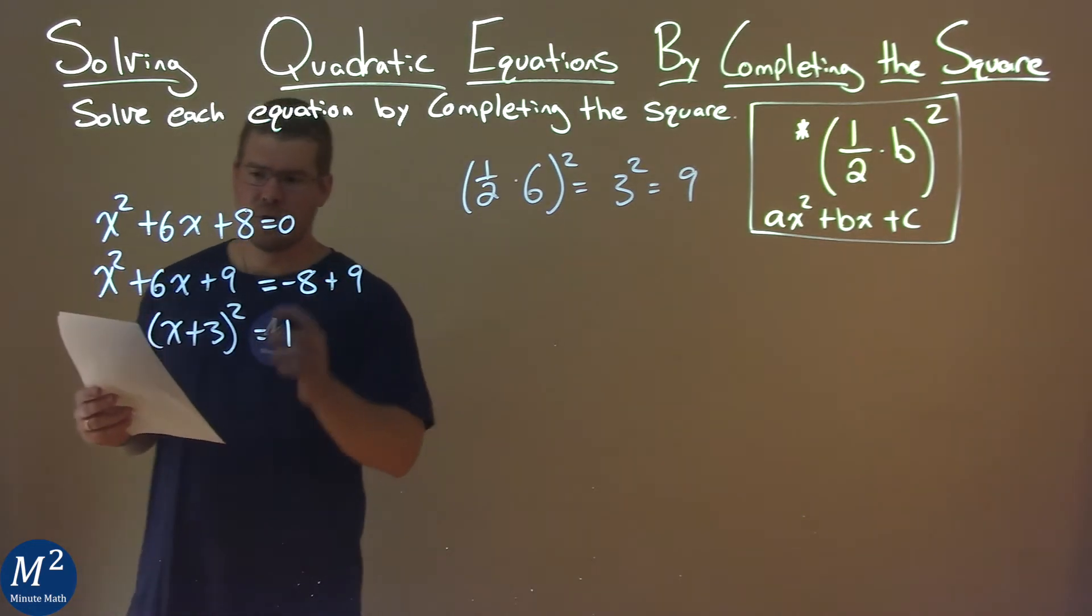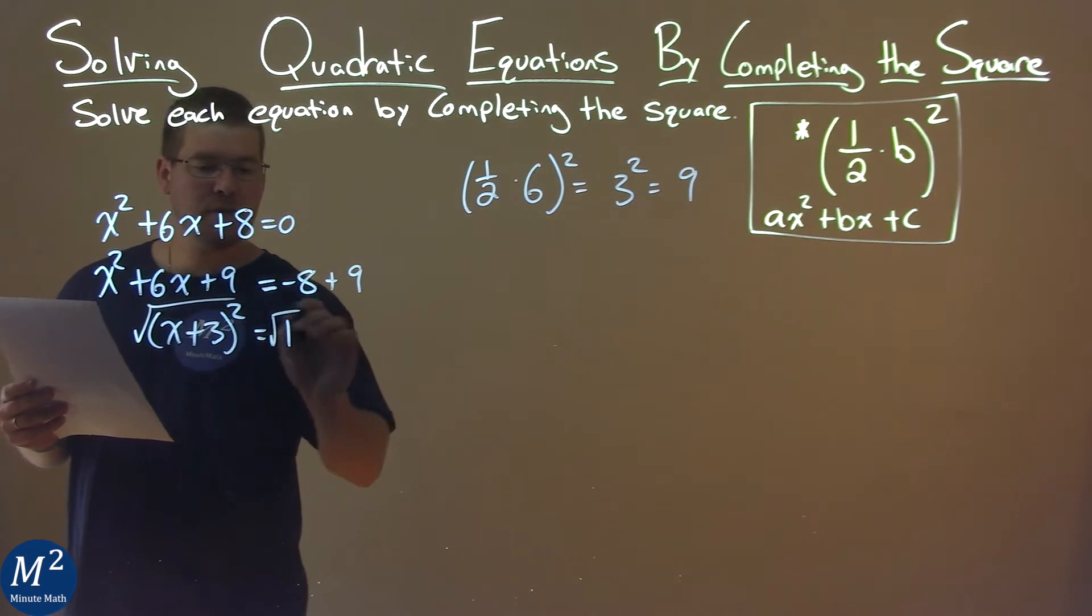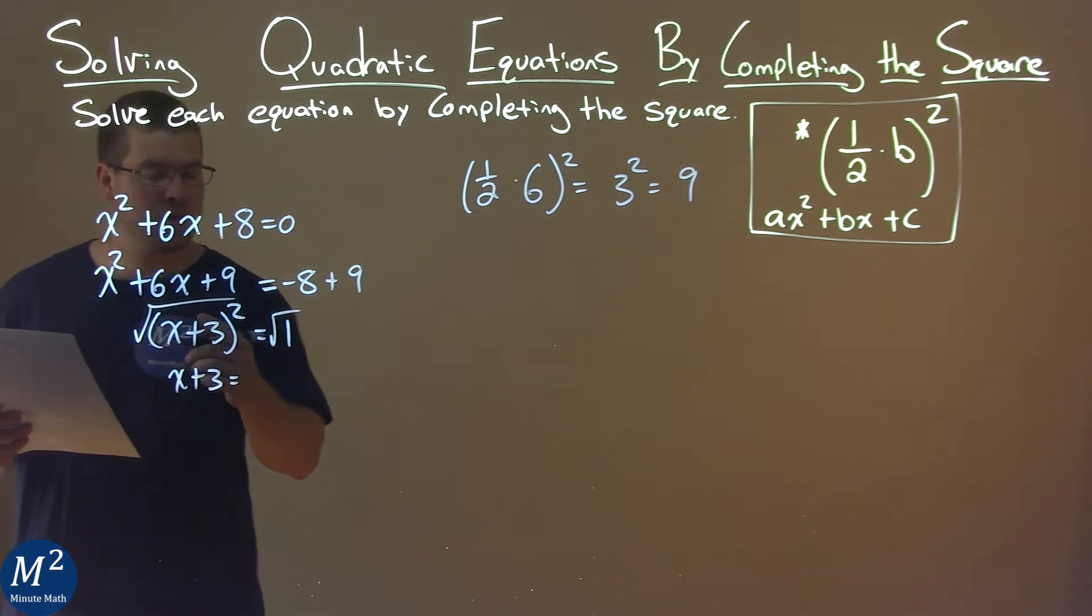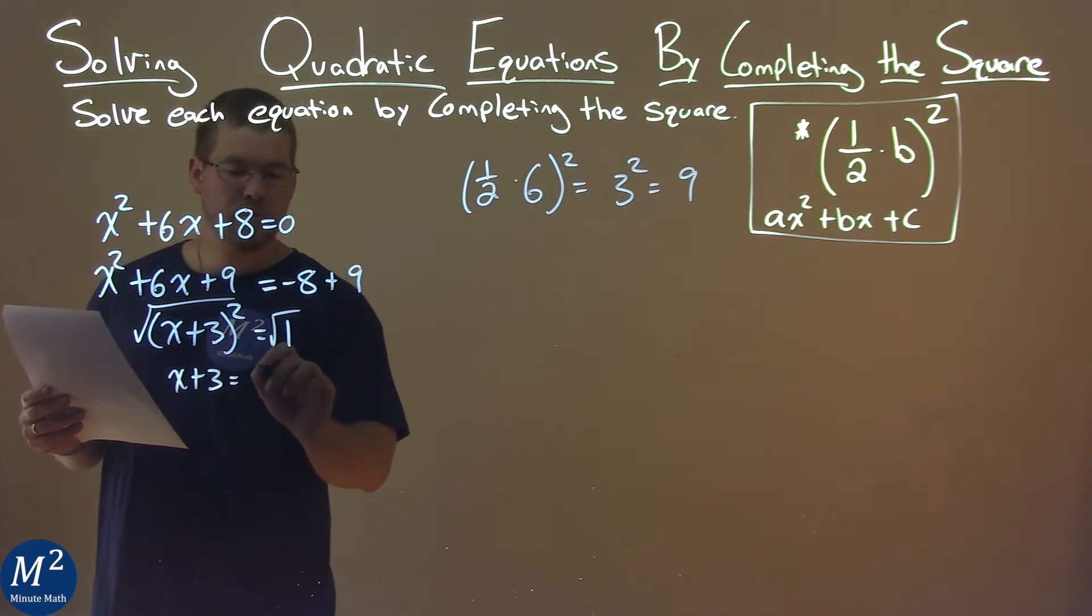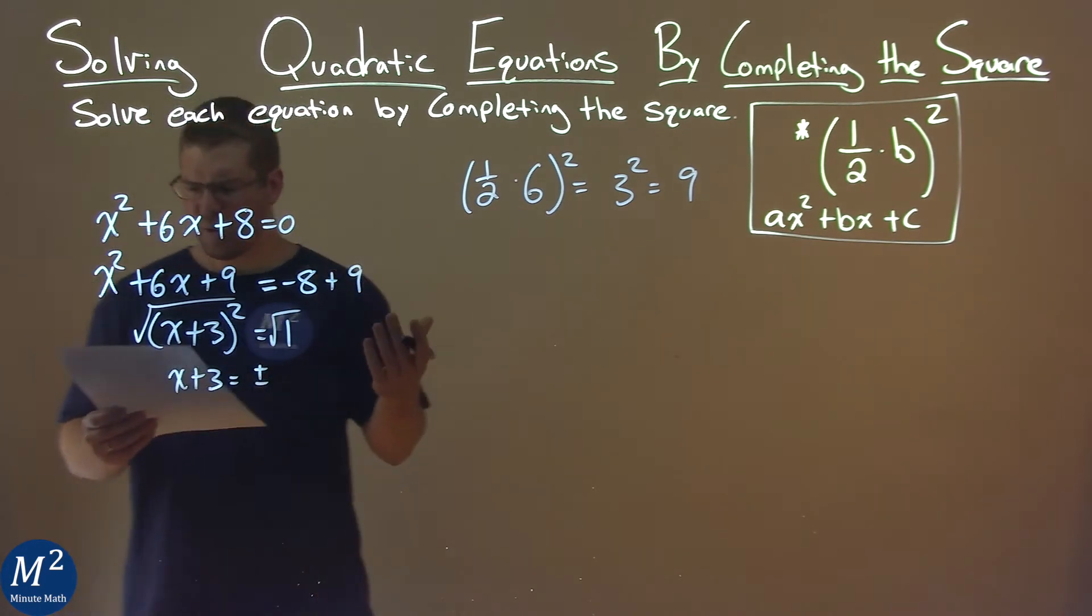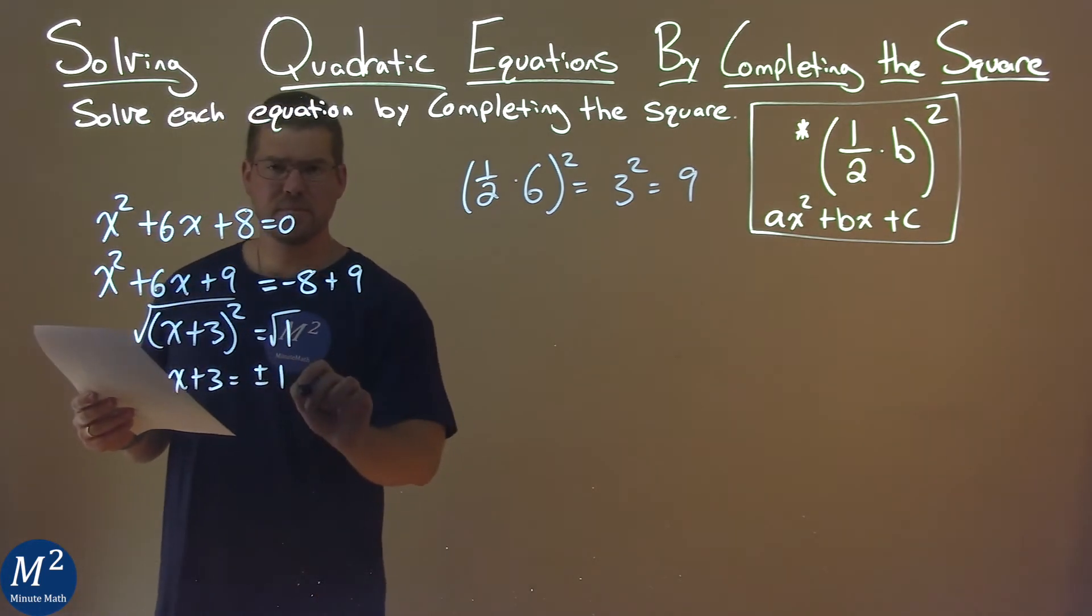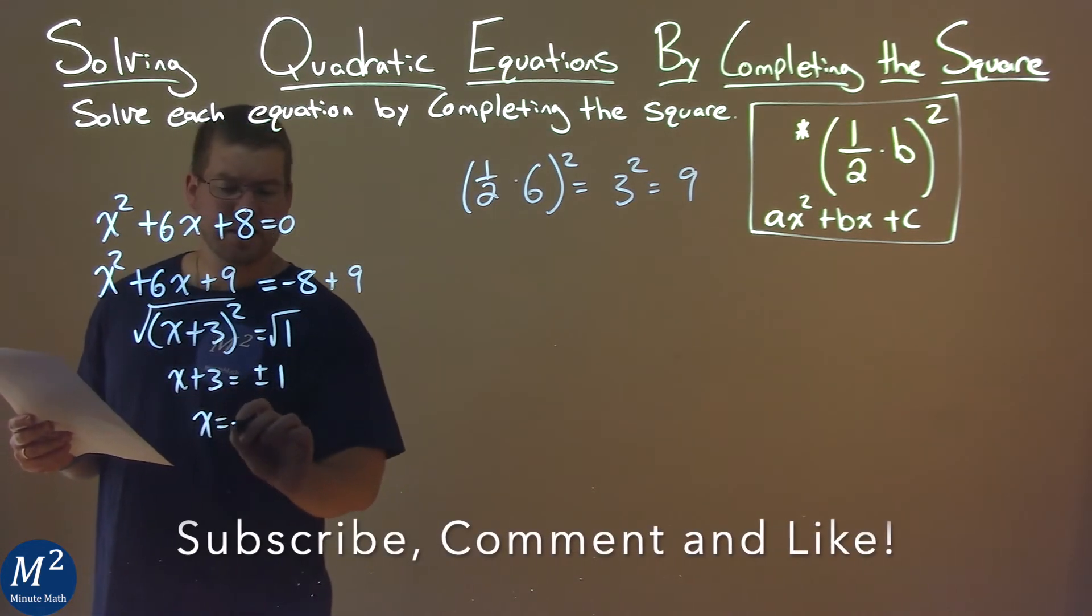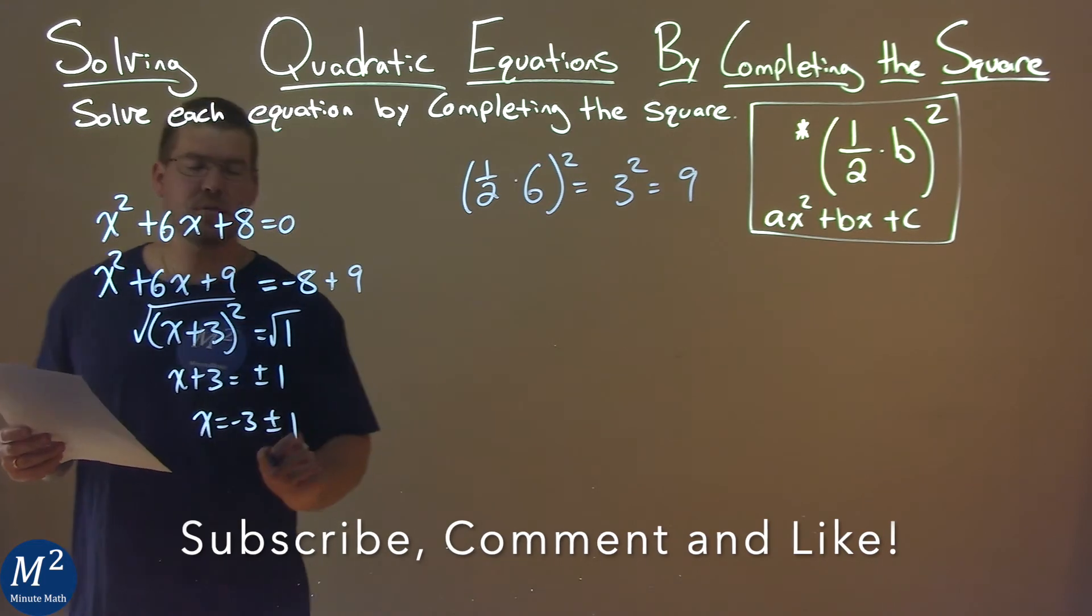Now we want to solve. So, I take the square root of both sides here, and we have x plus 3 on the left-hand side. Square root makes it a plus or minus over the equal sign, and the square root of 1 is just 1. Now, we subtract 3 from both sides, and we have x equals negative 3 plus or minus 1.